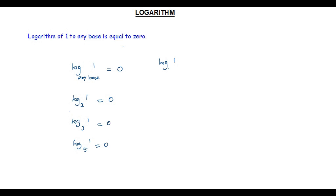If the argument of a logarithm is 1, its value is equal to 0 for any base. If we consider a logarithm with argument 1 and no base given, we understand it as common logarithm with base 10. So the value of log 1 to the base 10 is equal to 0, and simply log 1 is equal to 0.